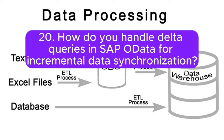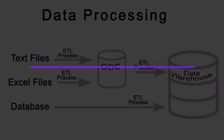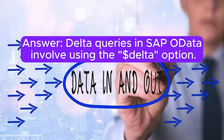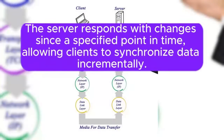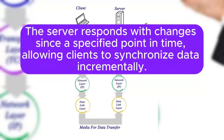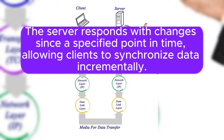Question 20: How do you handle delta queries in SAP OData for incremental data synchronization? Delta queries in SAP OData involve using the delta option. The server responds with changes since a specified point in time, allowing clients to synchronize data incrementally.